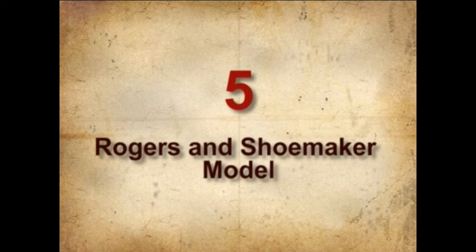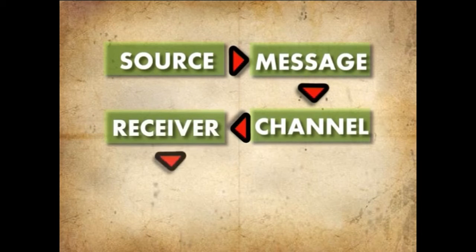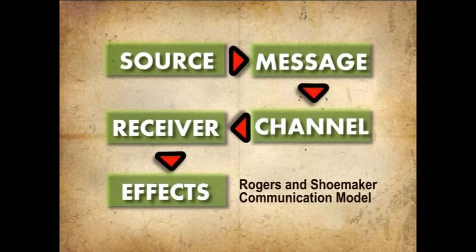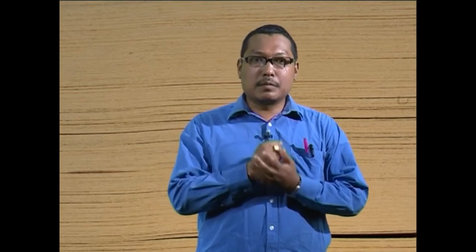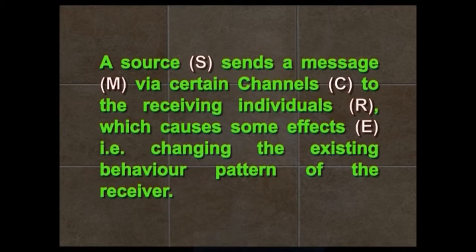Number five: Rogers and Shoemaker's model. Source, message, channel, receiver, and effects are the elements of the communication model according to Rogers and Shoemaker. They thought of the communication process in terms of the S-M-C-R-E model. According to them, a source (S) sends a message (M) via certain channels (C) to the receiving individuals (R), which causes some effects (E) — that is, changing the existing behavior pattern of the receiver.